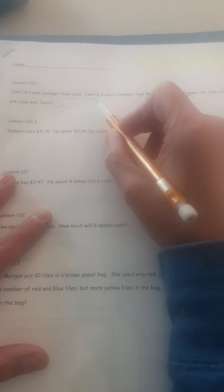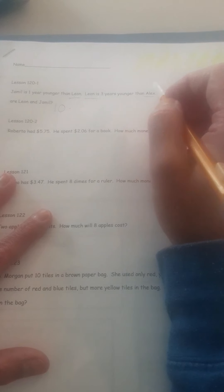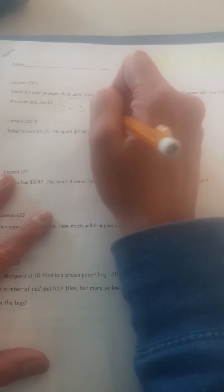Alright, so Alex is ten years old. So we know that. And first we need to figure out how old Leon is. It says he is three years younger than Alex. So we have to subtract ten minus three. And ten minus three is seven.